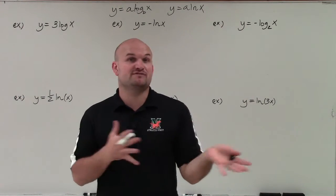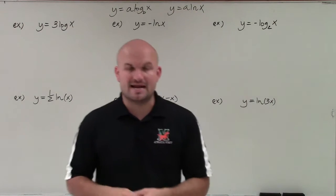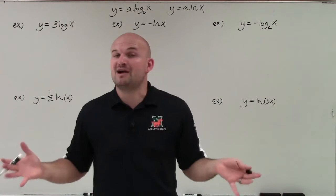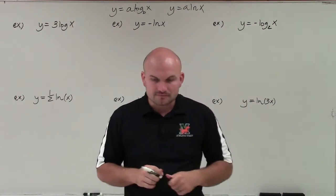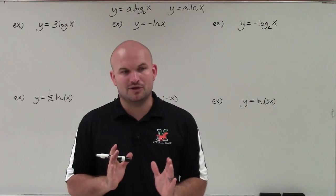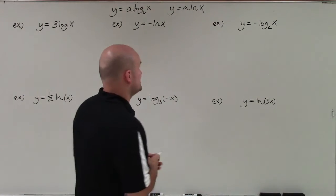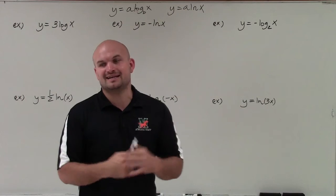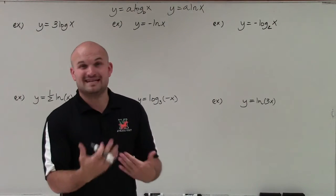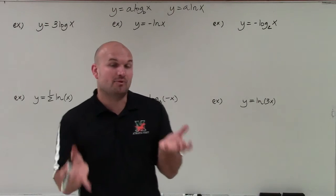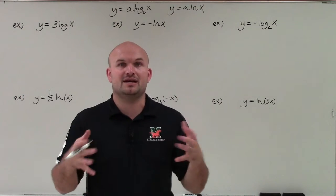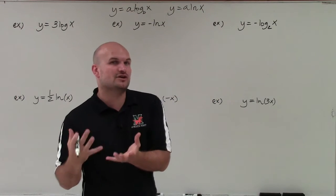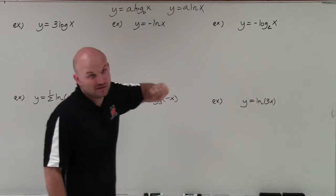Even though they're not translations — we're not shifting the graph left, right, up, or down — they are going to have some effects. I don't have graph paper, so I'm just doing a general idea of what the graph looks like using basic transformations. If you want to see how a graph changes, for instance with log base 2 versus log base 4, that is going to affect the graph, but I'm not going to get into that. The points and transformations I'll deal with will still produce a very similar graph even if those numbers were different.